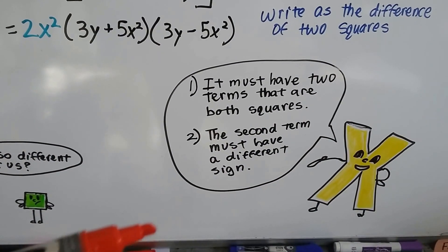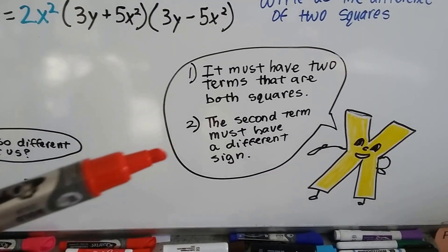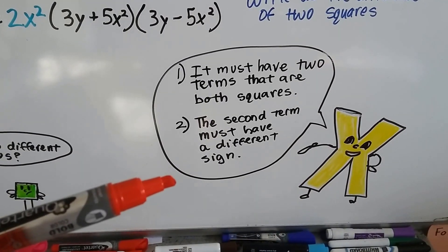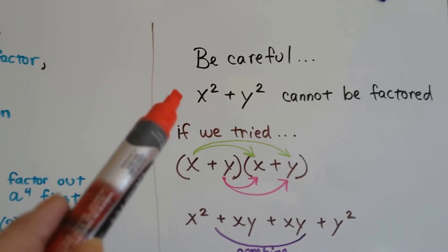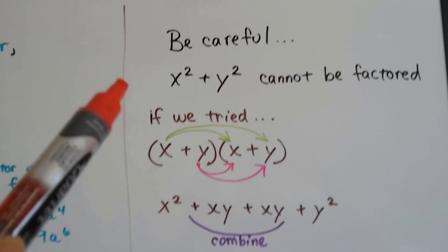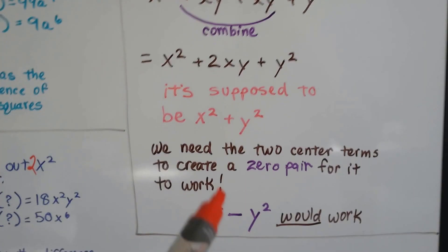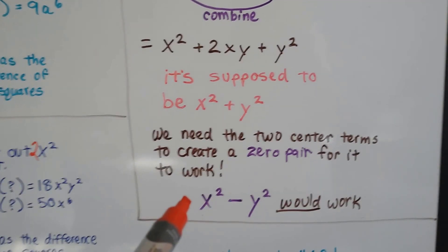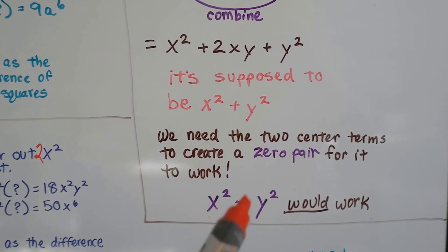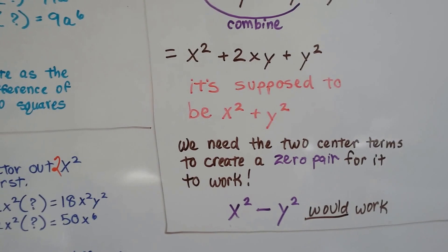So the first condition is they have to have two terms that are both squares, and the second condition is the second term must have a different sign. So if you look at this, this is a positive x² and that's a positive y². They don't have different signs, but these do. This would work because this is a positive x² and a negative xy. And it would also work if that was a negative and that was a positive, as long as they have different signs.